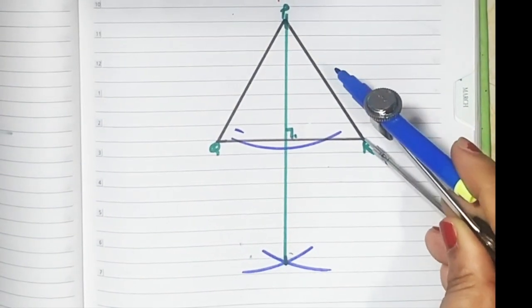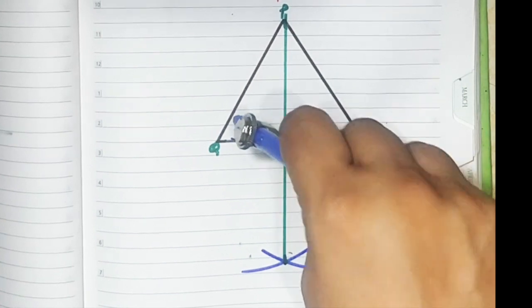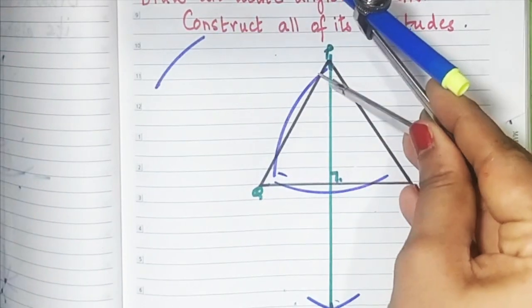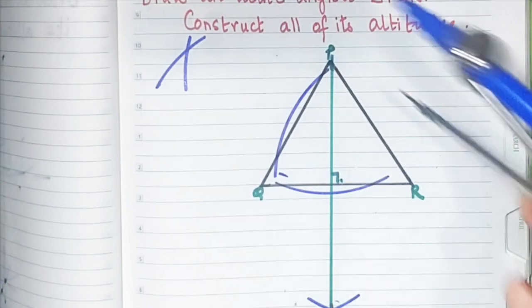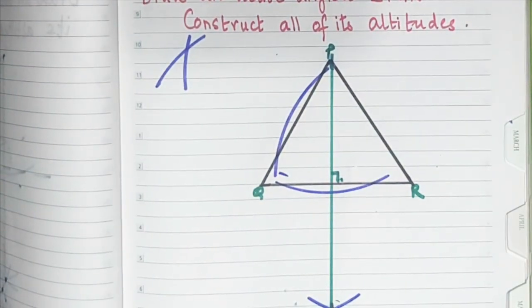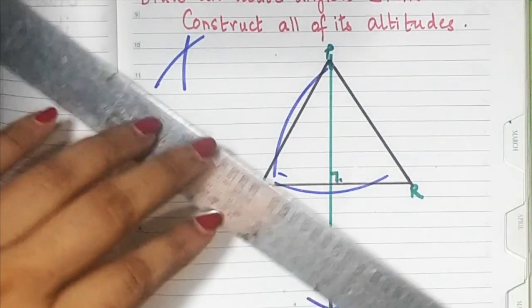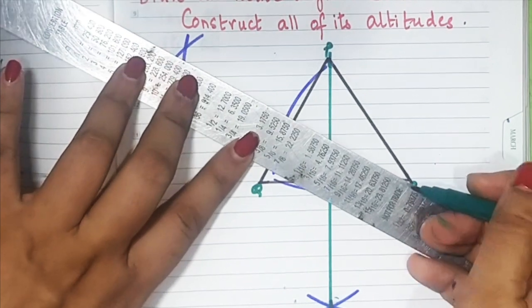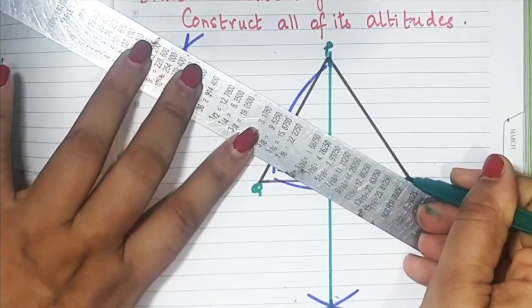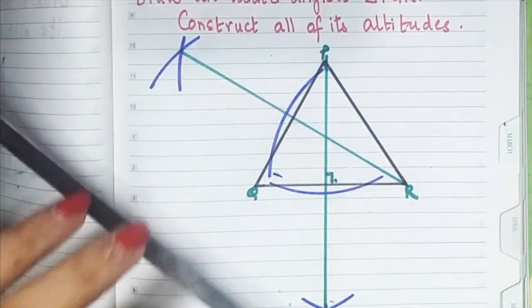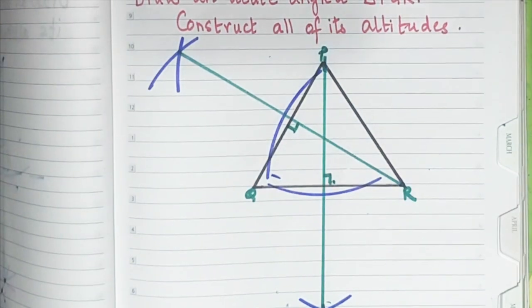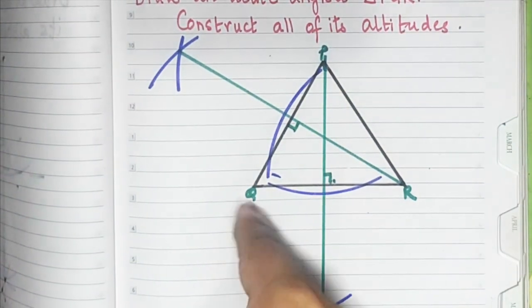From R what we'll do is, keep your pointer here, draw a smiling face, draw an arc, cut that arc. Now you have to draw from point Q.